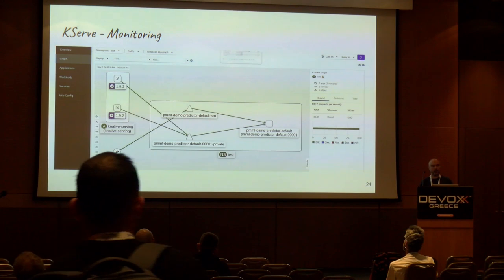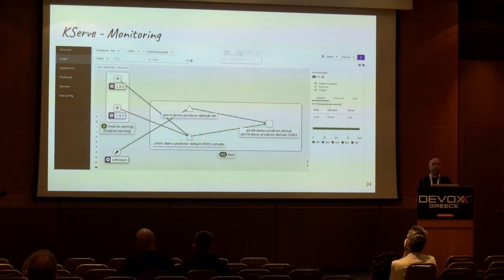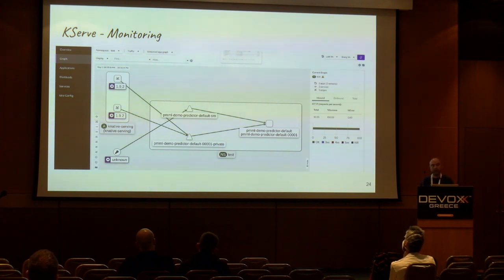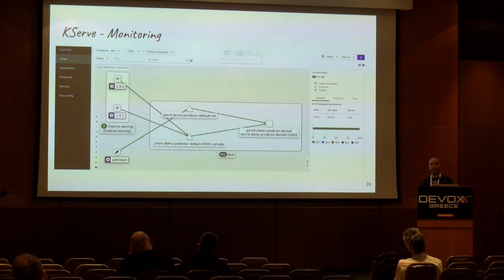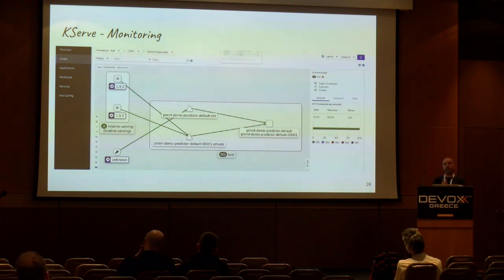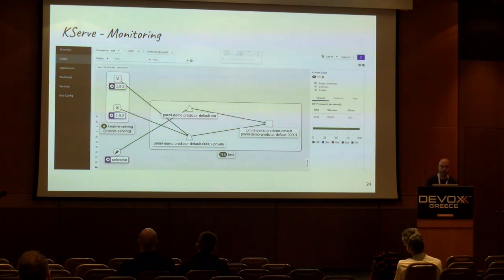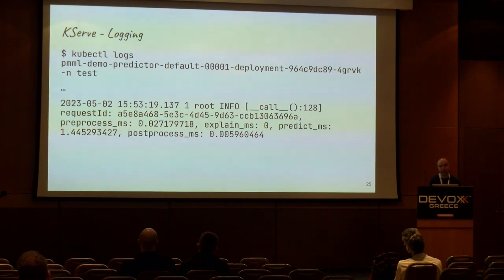Istio offers its own observability stack. With Kiali, observation of traffic can be done easily. Here we see the previous model deployed and traffic going through the model server and two other components. The two components on the upper left corner are the Activator and the autoscaler mentioned earlier. The Activator is used to route the request, and the autoscaler is for scraping metrics from the pods. All these tools are very useful for monitoring your models, and people who deploy Istio use this stack.